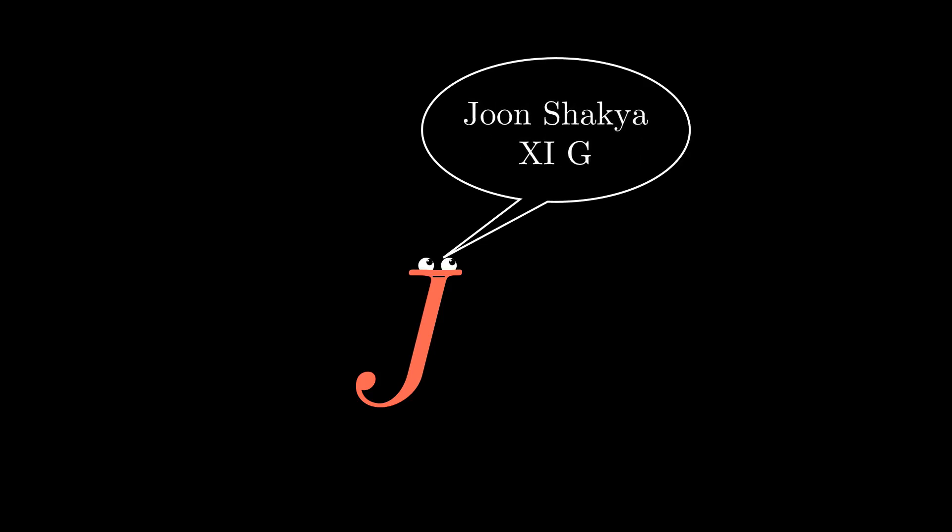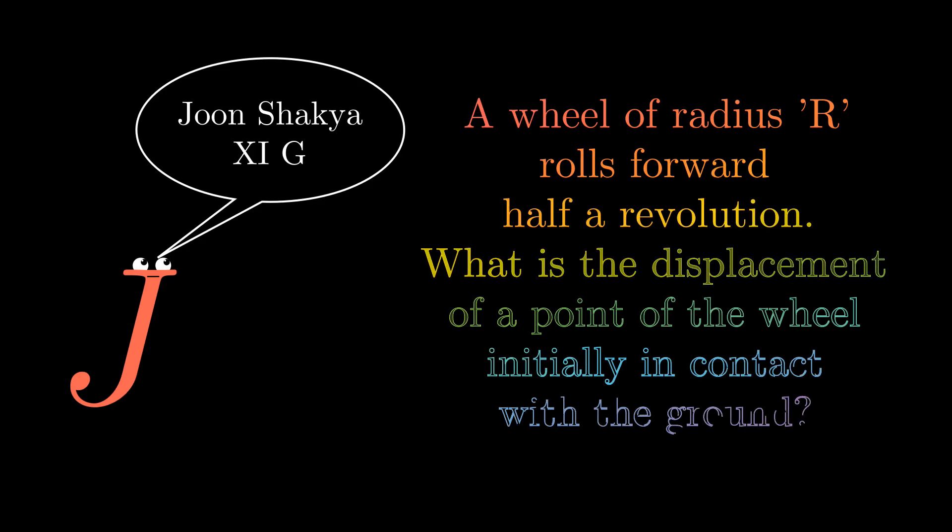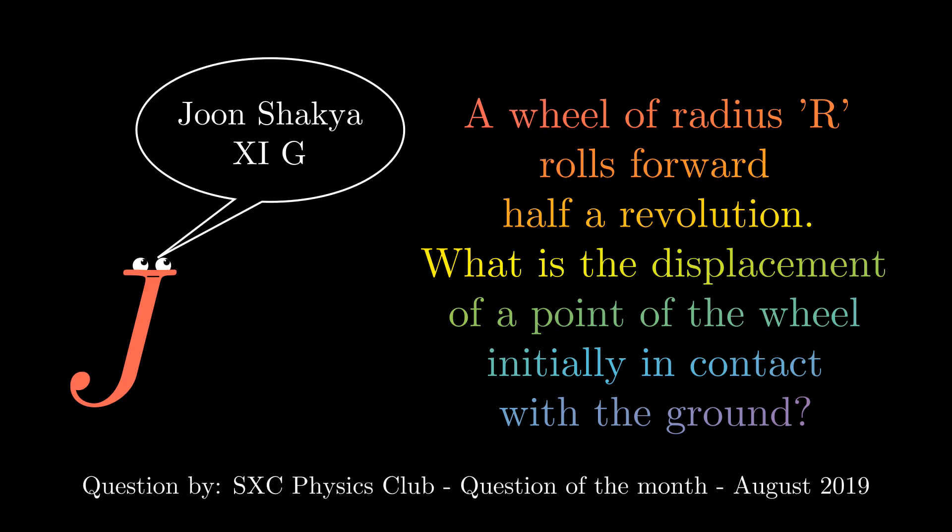Greetings everyone, my name is Junshakya from 11G and the question we are going to solve today is as follows: A wheel of radius R rolls forward half a revolution. What is the displacement of a point of the wheel initially in contact with the ground?